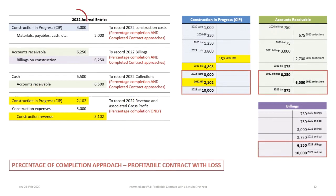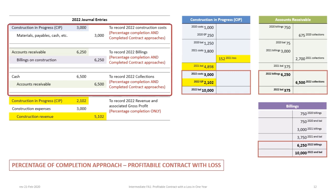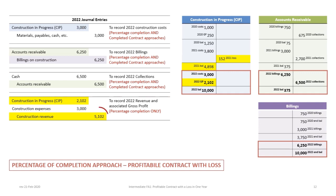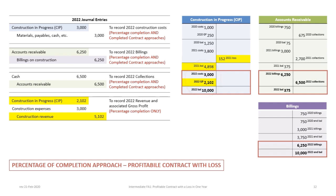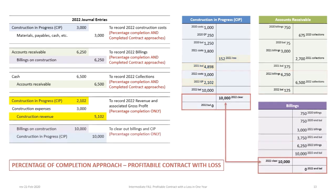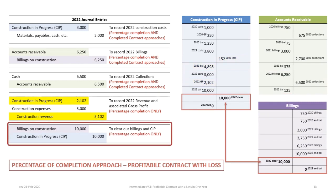Reviewing our 2022 journal entries under percentage of completion: these have not changed except for the items highlighted in yellow. Our revenue is $5,102,000 and costs are the same, giving us gross profit on the contract in 2022. When we post these to our construction in progress account, we have a beginning balance from 2021 of $4,898,000, plus the construction costs, plus the gross profit, leaving us with a balance of $10 million in the account at the end — which nets itself out against the billings. Then we have our final entry to clear out the billings and the construction in progress accounts, resulting in zero balances.